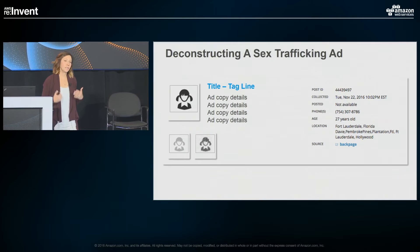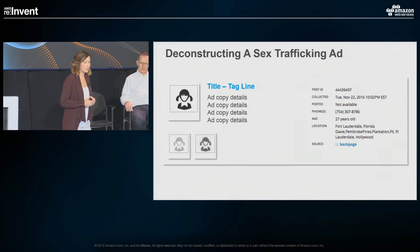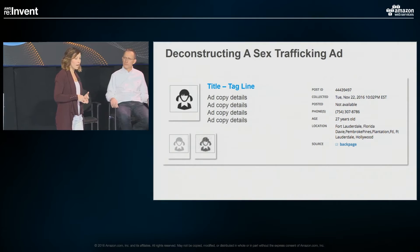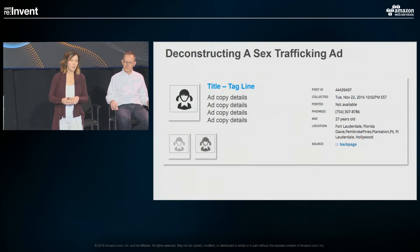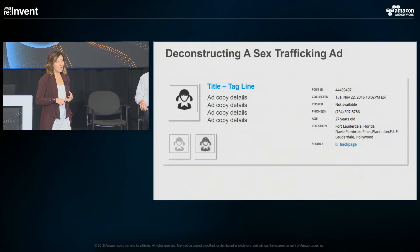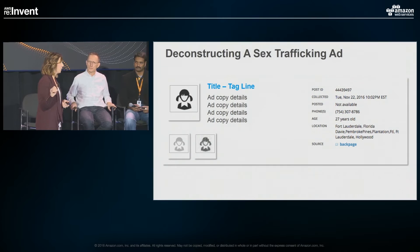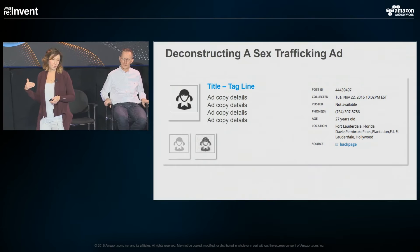I wanted to talk through the deconstruction of a sex trafficking ad — we've sanitized a lot of this. What you have is anything you'd typically have in any regular type of posting, like if you were going to sell a couch: a title, a tagline, ad copy details, and metadata on the right-hand side including post ID, when we collected that data, phone number, age if indicated, and multiple locations. The first location is from the database field of the primary source, and secondary and tertiary locations are free-form fields, plus the actual source link.